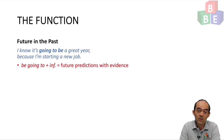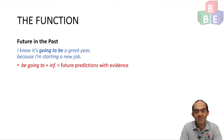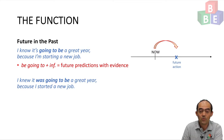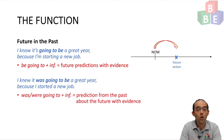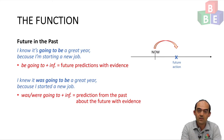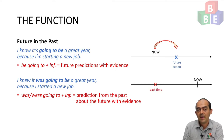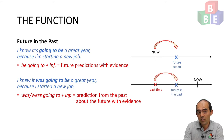We also saw how we can use be going to to talk about future predictions with evidence: 'I know it's going to be a great year because I'm starting a new job.' In future in the past, I might say 'I knew it was going to be a great year because I started a new job.' This is using was or were plus going to plus infinitive to talk about a prediction from the past about the future which has already happened, this time with evidence. I am looking back to the past from now — the present — and that past time is predicting an event which is in the future from the past time, but in the past from now.